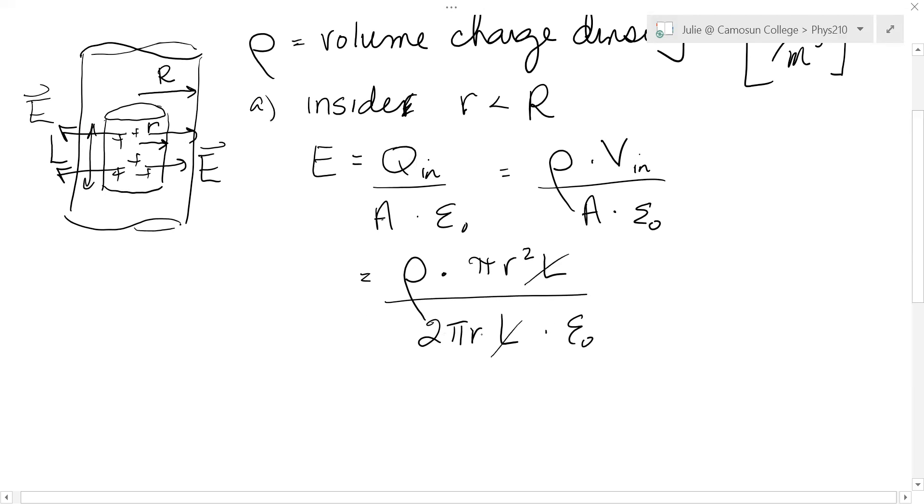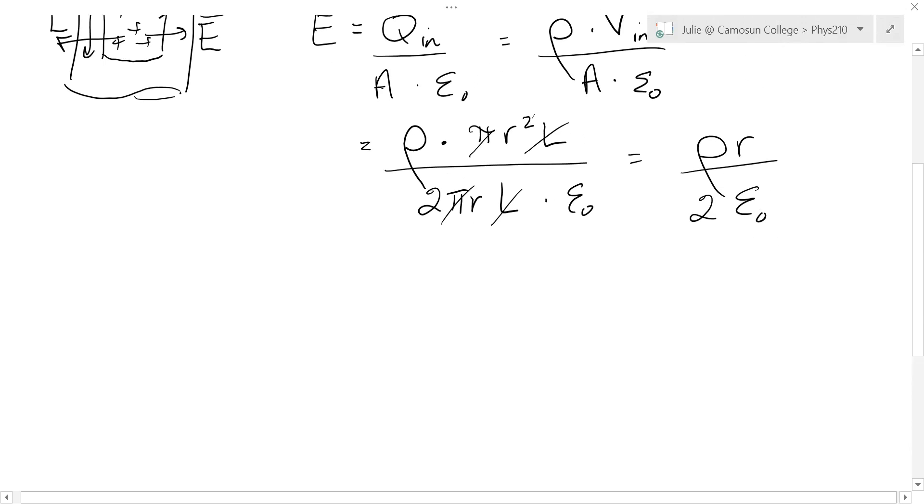Surface area through which the electric field pierces is 2 pi r L epsilon naught. And you can see the L's cancel, pi's cancel, one of the R's cancel, and we're left with rho r over 2 epsilon naught. So that's the electric field inside, a distance r from the center.